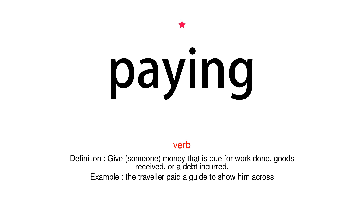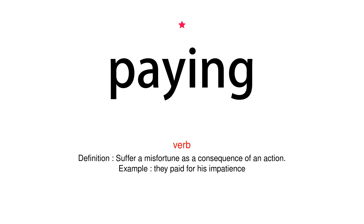Example: The traveler paid a guide to show him a cross. Verb. Definition: Suffer a misfortune as a consequence of an action. Example: They paid for his impatience.